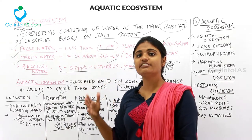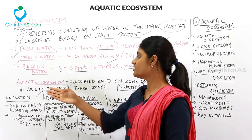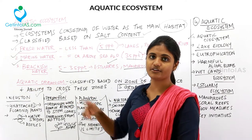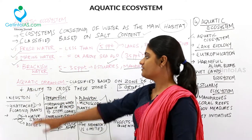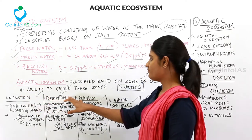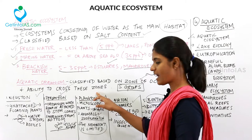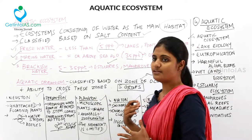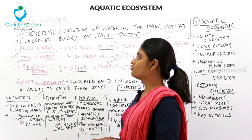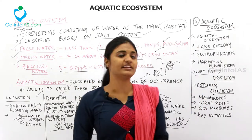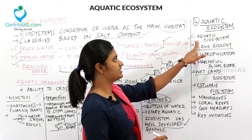So there are totally five groups into which we divide aquatic organisms: neuston, periphyton, plankton, necton, and benthos. These constitute the aquatic ecosystem.